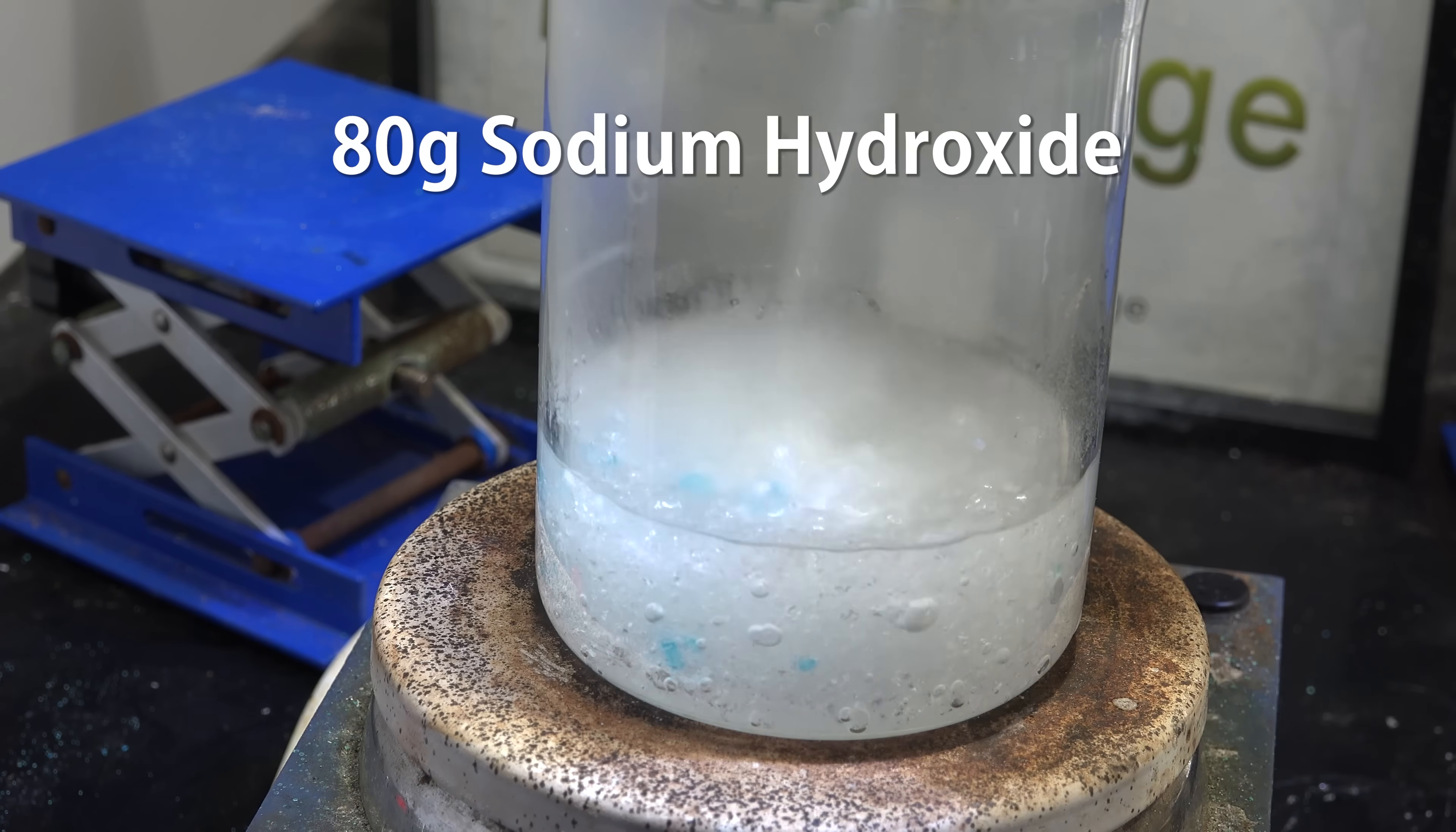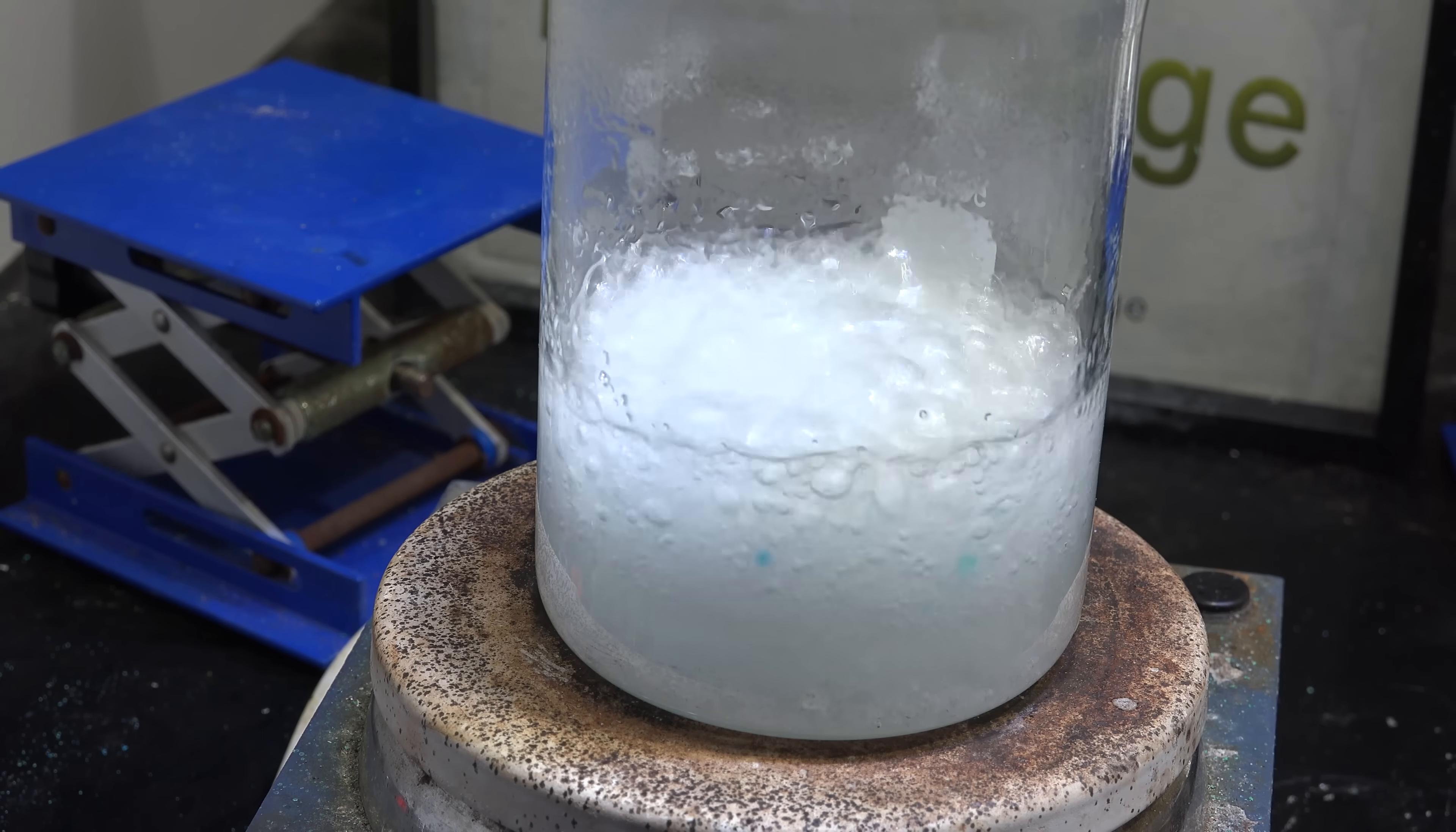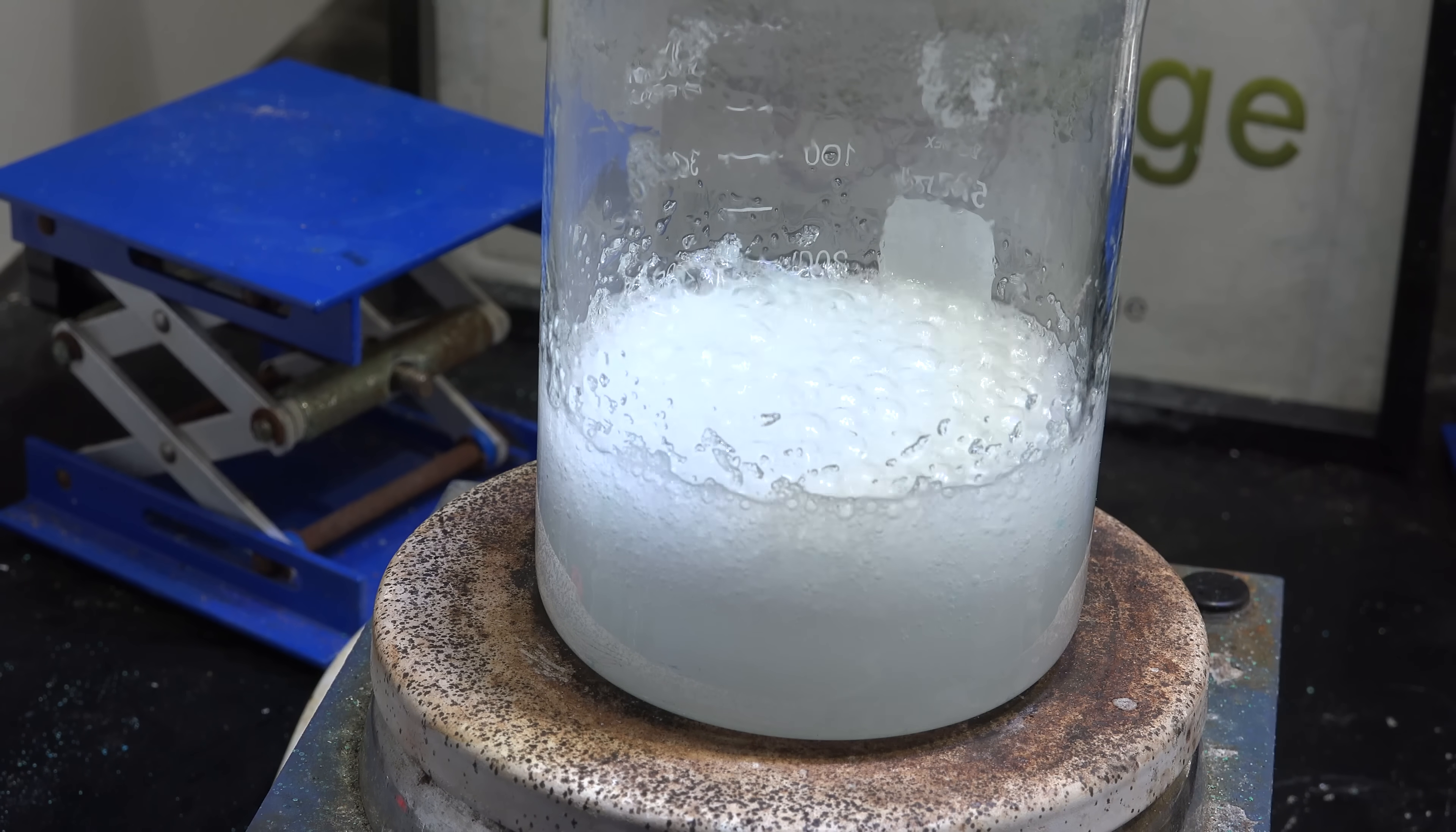Now with stirring, add 80 grams of sodium hydroxide in small portions. Don't add it all at once or it will boil out of control from the self-heating. I got my sodium hydroxide from drain opener.